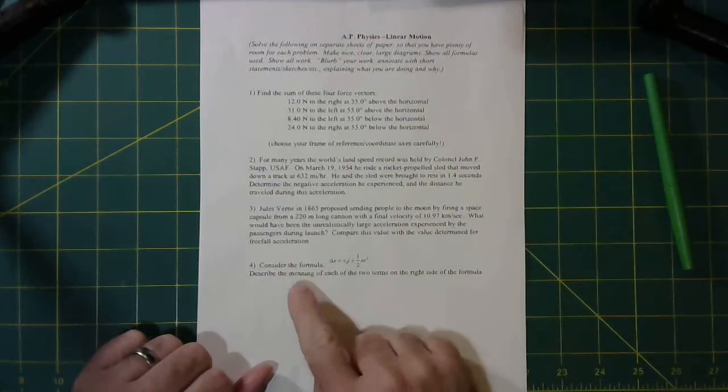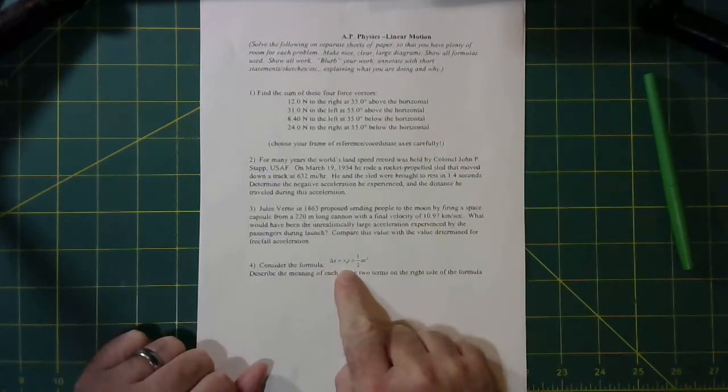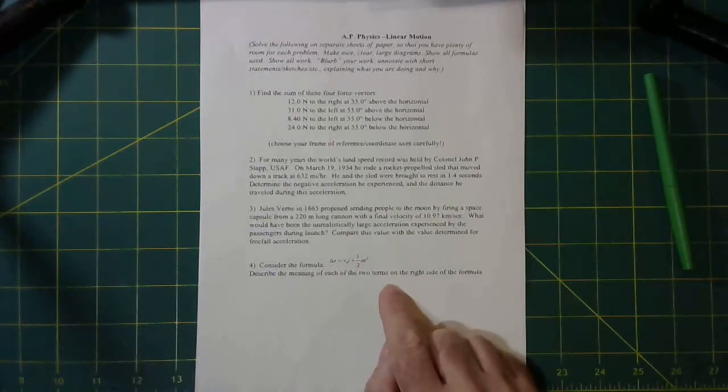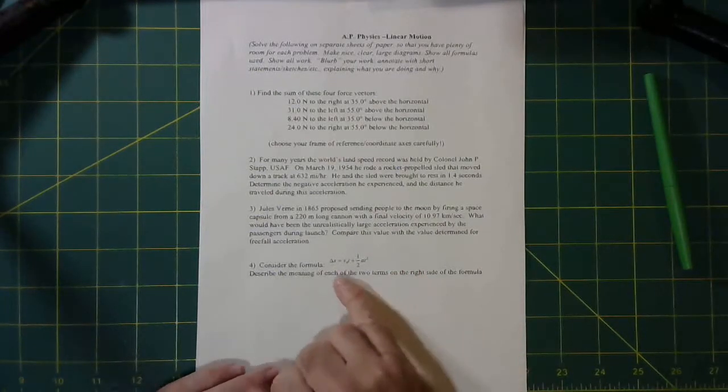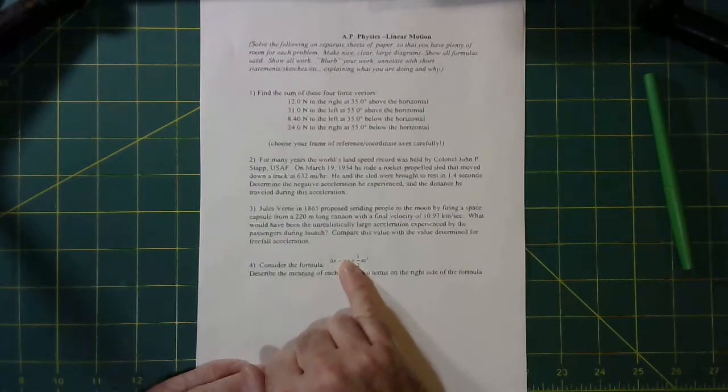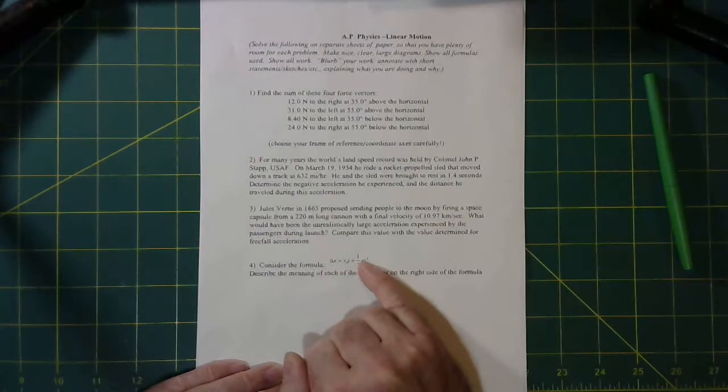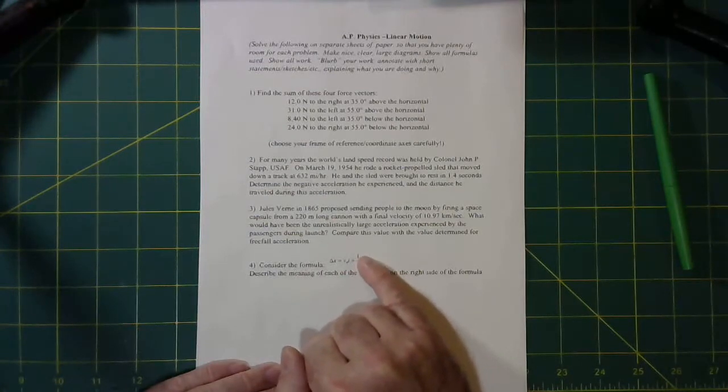In your motion problem 4, it says consider the formula: delta x is v₀t plus ½at squared. Describe the meaning of each of the two terms on the right side of the formula. In other words, I want to know the meaning of the v₀t term, what does that term represent? And the ½at squared term, what is that term trying to tell you?